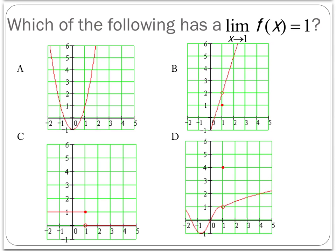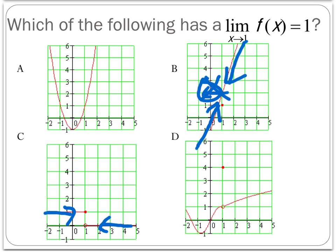Let's take a look at these same graphs now, but ask: which of the following has a limit as x approaches 1 of f of x equal to 1? The idea is that as we trace from the left side and the right side, we should be getting closer and closer to the value 1. This particular graph gets closer to 2 — not the answer we're looking for. We already saw that C's left and right sides don't match up, so the limit doesn't exist — it can't be that one.